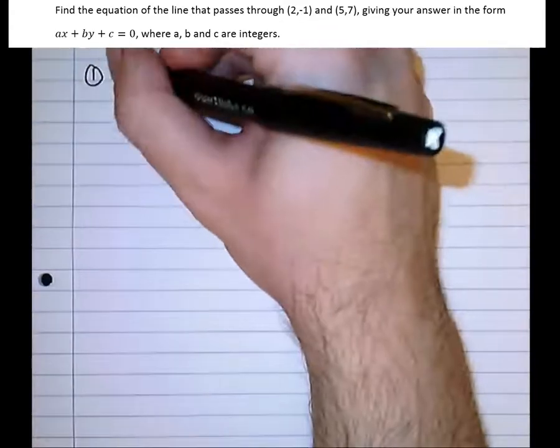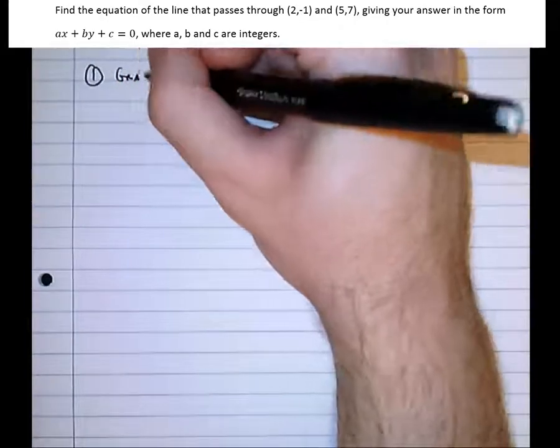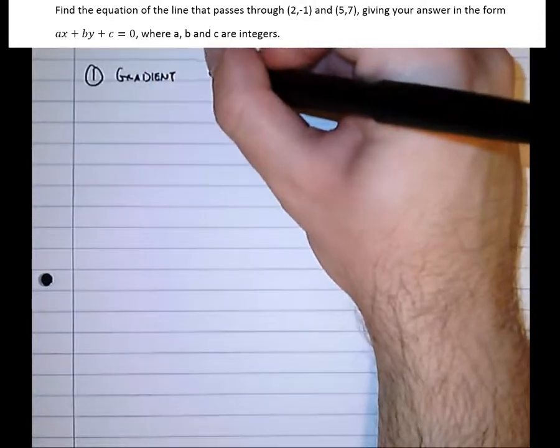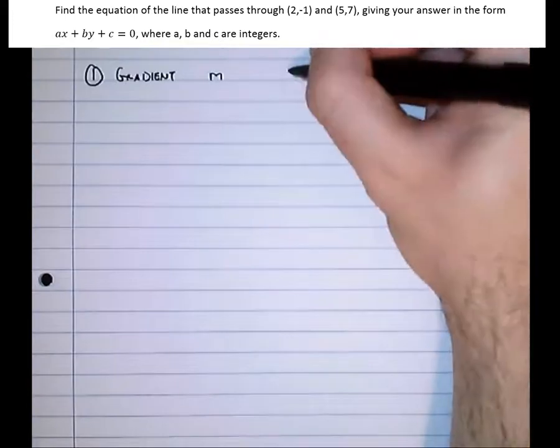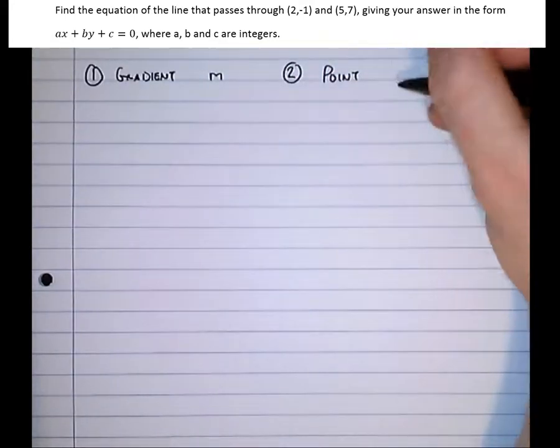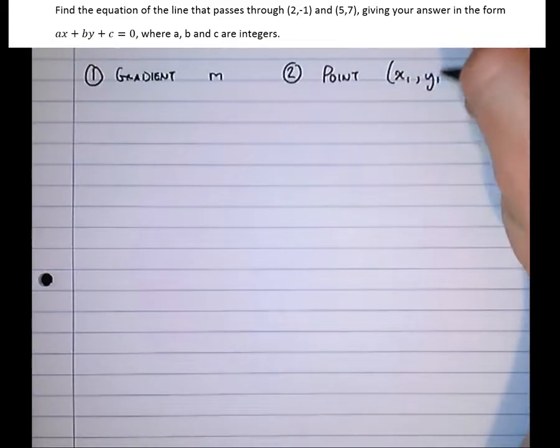We need two bits of information. The first bit of information we need is the gradient of the line, which we call m. And the second bit of information we need is a point on the line, which we usually call x₁, y₁.